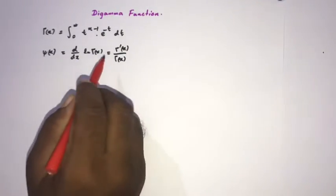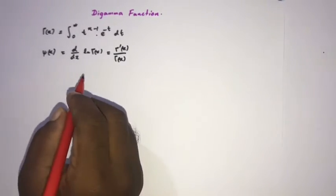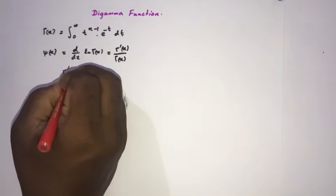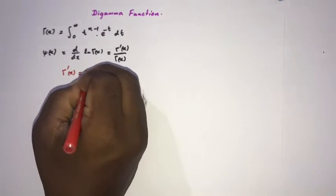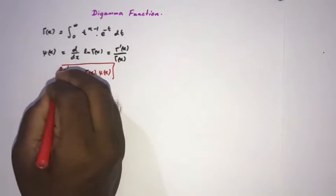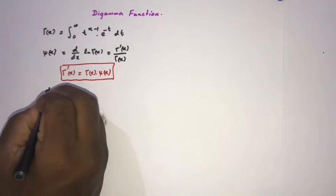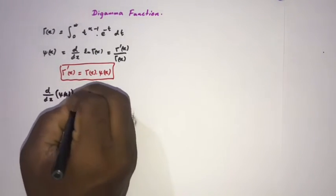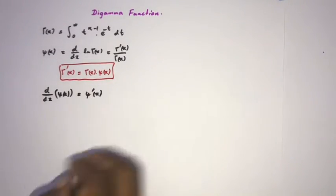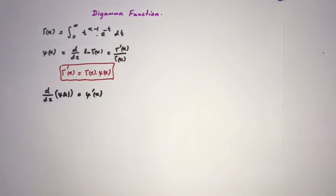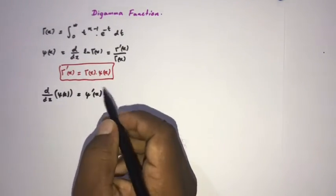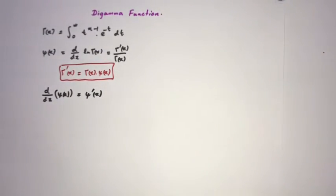Here we have an interesting identity I use when solving many integrals: Γ'(x) = Γ(x) · ψ(x). If we differentiate the digamma function we get the trigamma function, differentiating the trigamma gives the tetragamma, and so on — these are all polygamma functions. In a future video I will talk about the polygamma function.